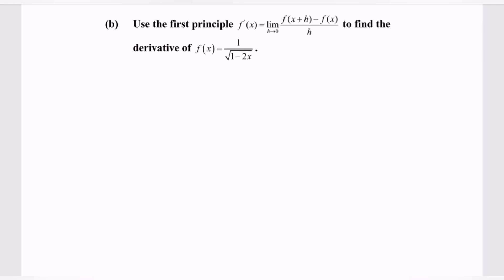Hello everyone, welcome to my channel. In this video, I'm going to discuss an example for the first principle. We will use the first principle formula for f prime to find the derivative for the function f(x) is equal to 1 over square root of 1 minus 2x.